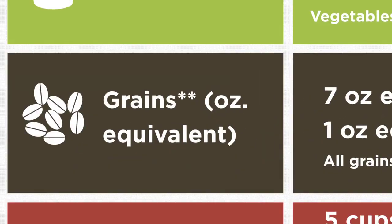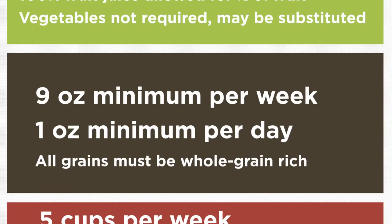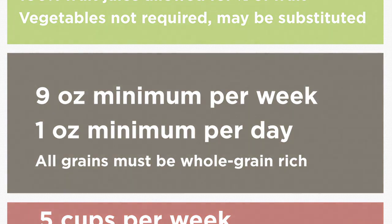For grains, a minimum of nine-ounce equivalents are required per week for students in grades K through 12, and at least one-ounce equivalent must be offered daily. All grains must be whole-grain-rich for all grade levels at breakfast.